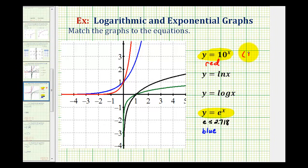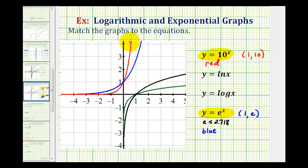For y equals 10 to the power of x, if x equals 1, the y coordinate would be 10 to the first, or 10. For y equals e to the x, if x equals 1, y would be equal to e, or approximately 2.718. The point 1 comma 10 would be off the screen, but the red graph would pass through it. When x equals 1 on the blue function, the y value is less than 3, which is approximately 2.718, or e. So we do have the exponential functions identified correctly.